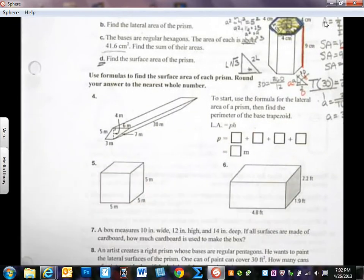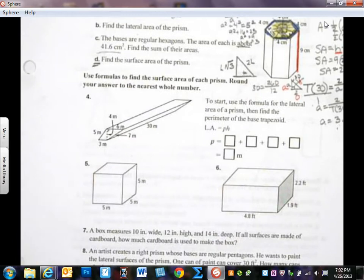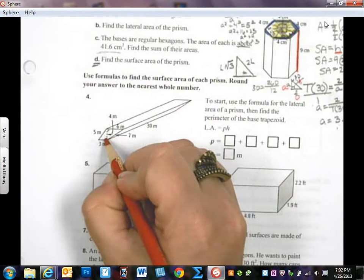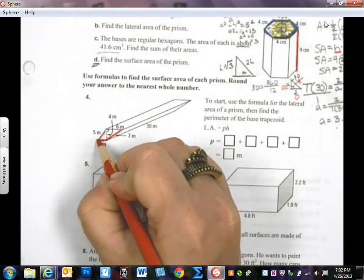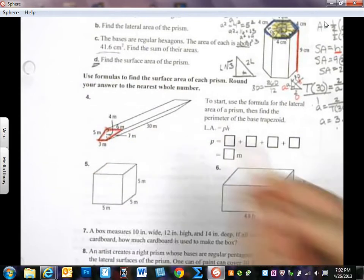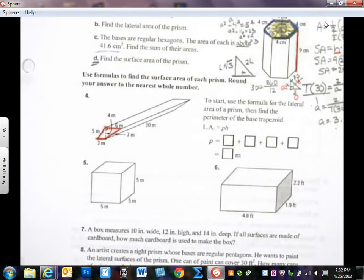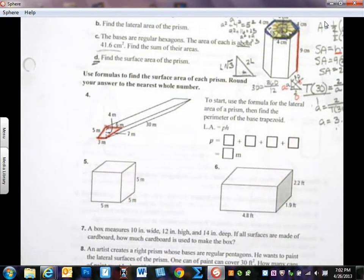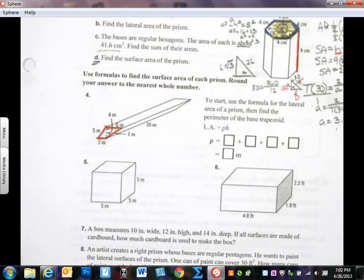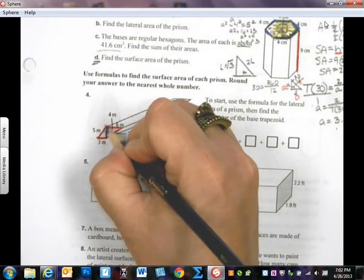But I wanted to just kind of talk for a second about 4. I know you're supposed to do odds, but I want you just to see this. This red shape is the base of this prism. Notice that there's the height, and that the height is 4 meters. So that's the height.